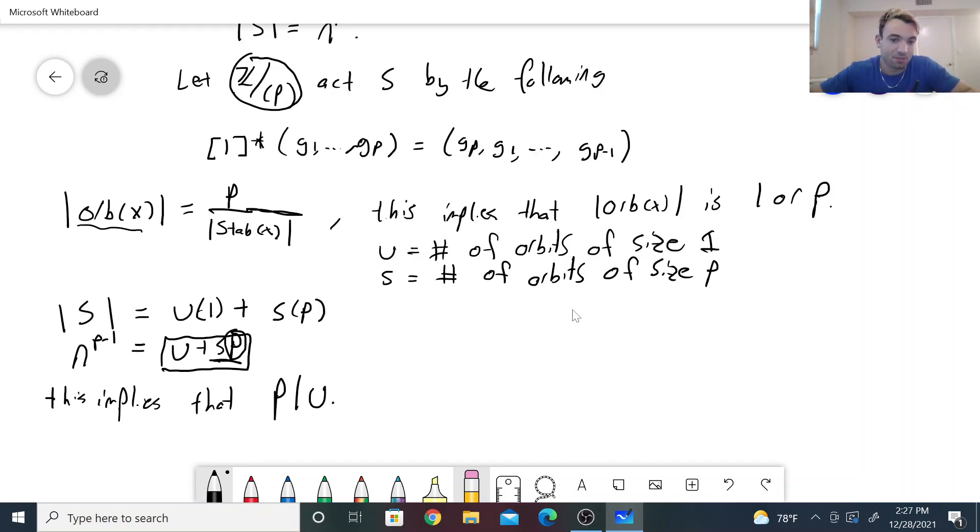So u is the number of orbits of size 1. So the question is, maybe u is 0. You could have 0 orbits of size 1. But it's not in this case because you can take the element of S, just the identity element p times, this is an element of S, and it will have an orbit of size 1. So we know that u is greater than or equal to 1, and p divides u, so that means u has to be greater than 1, strictly greater than 1, because p is a prime.